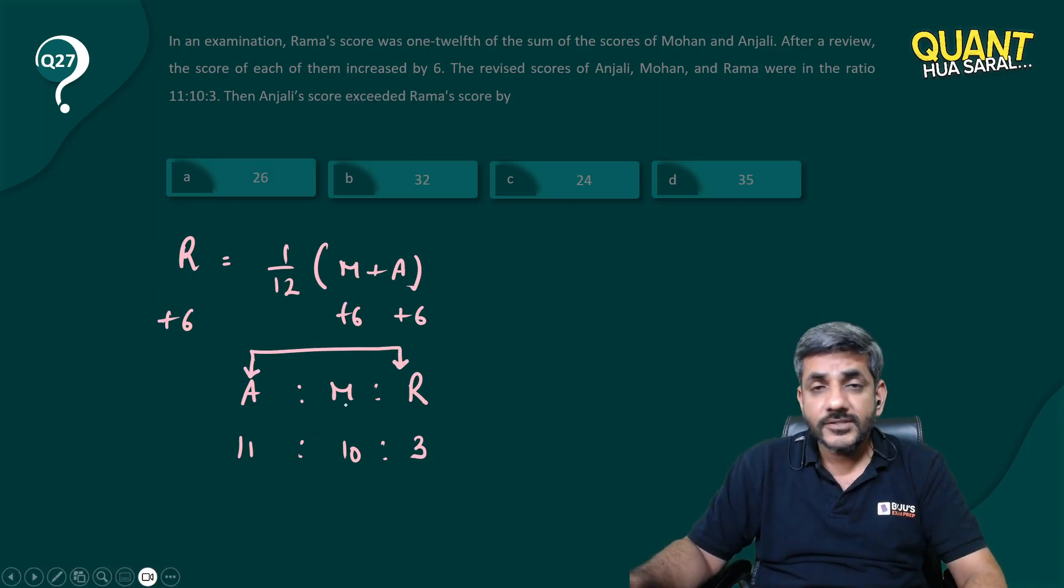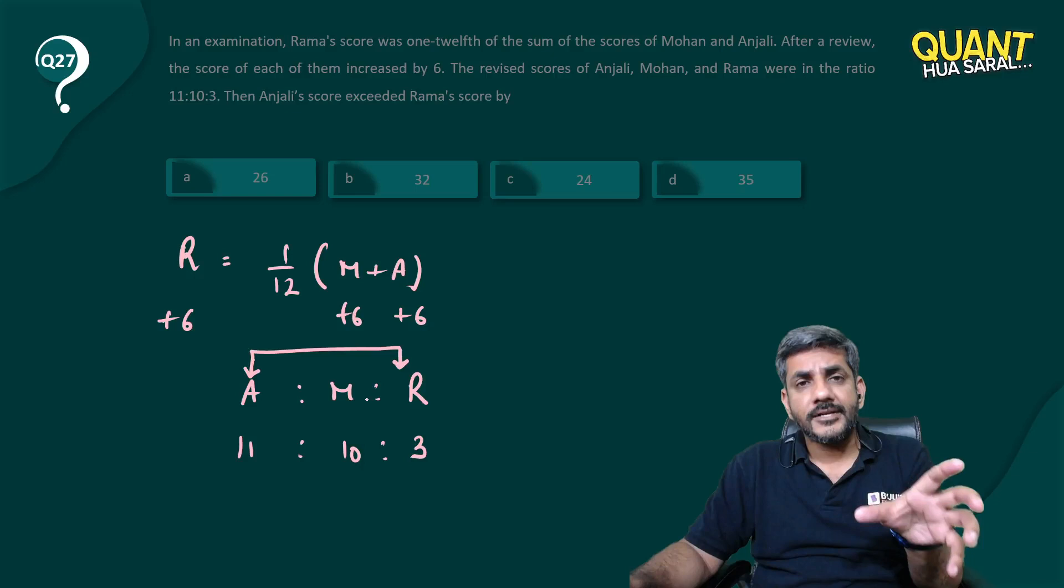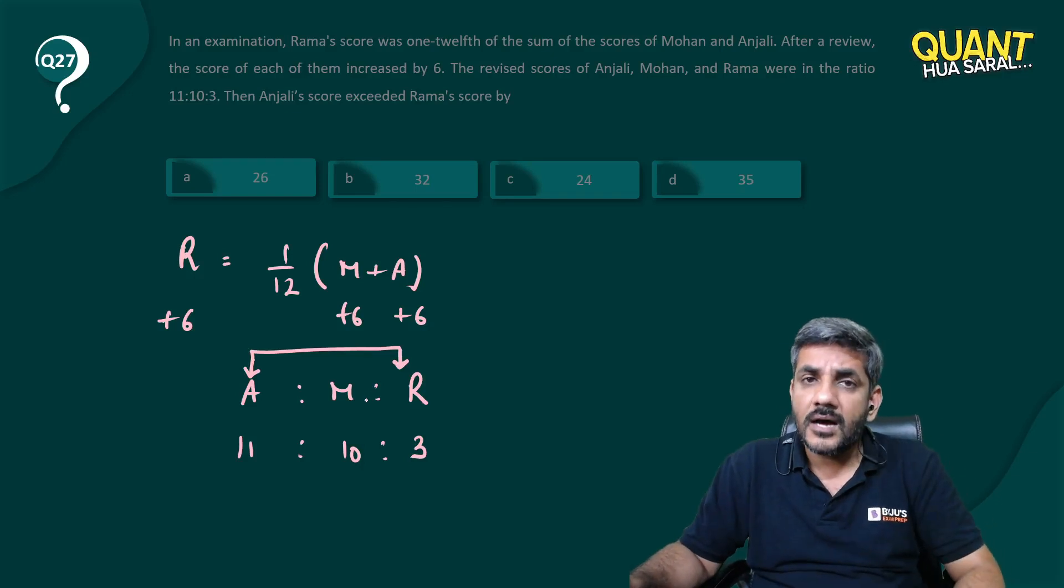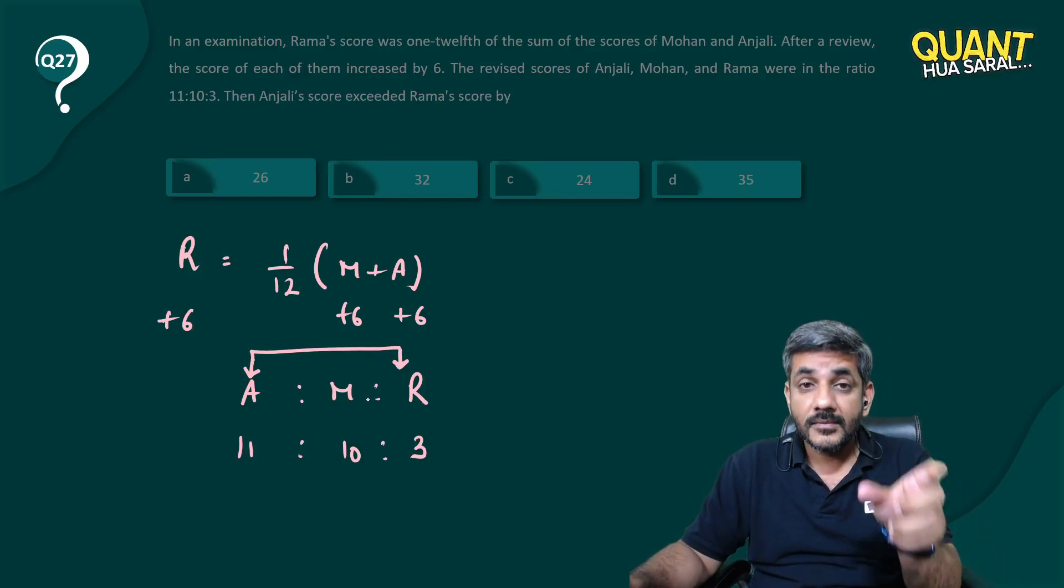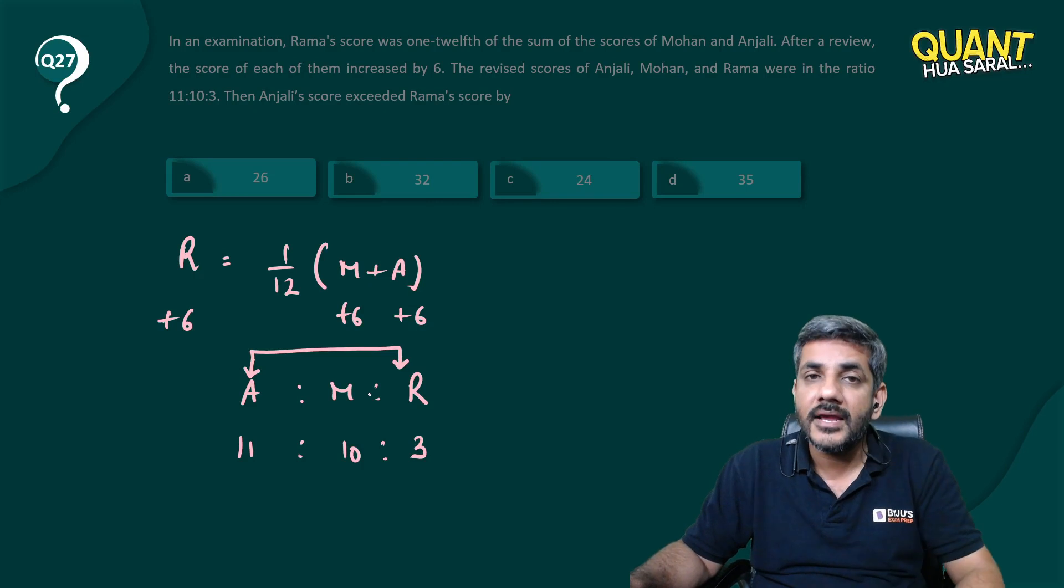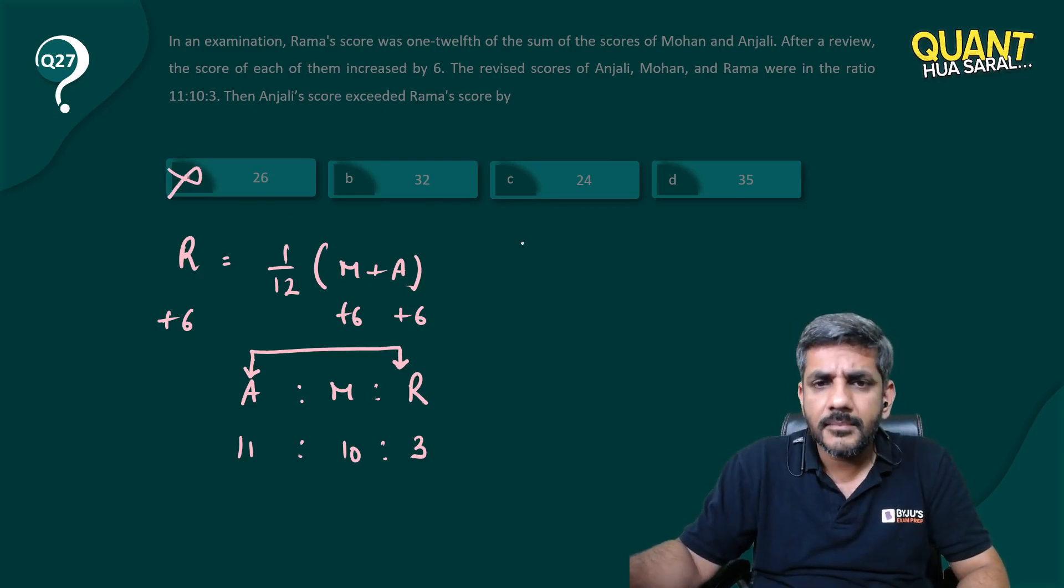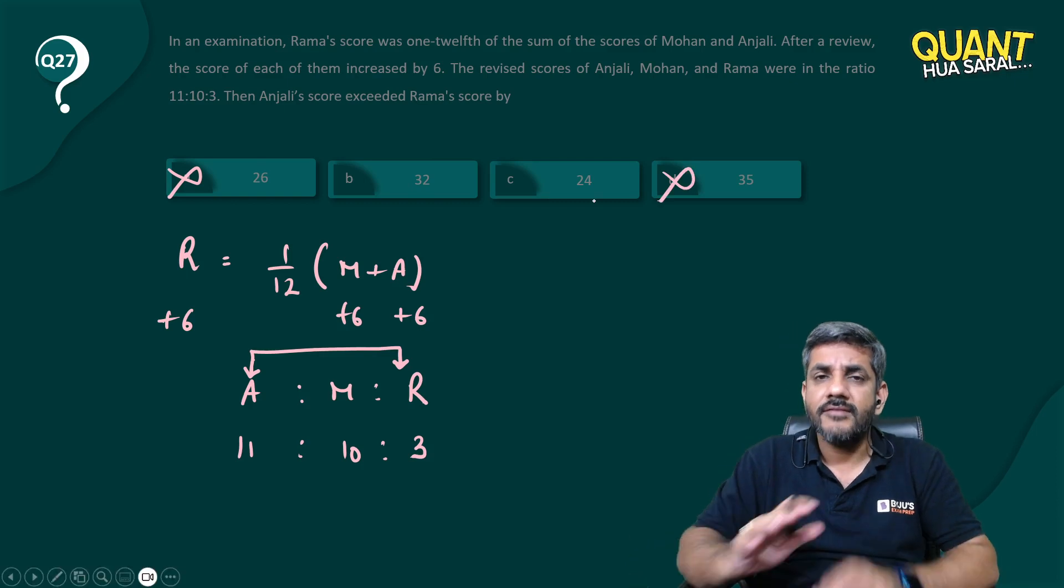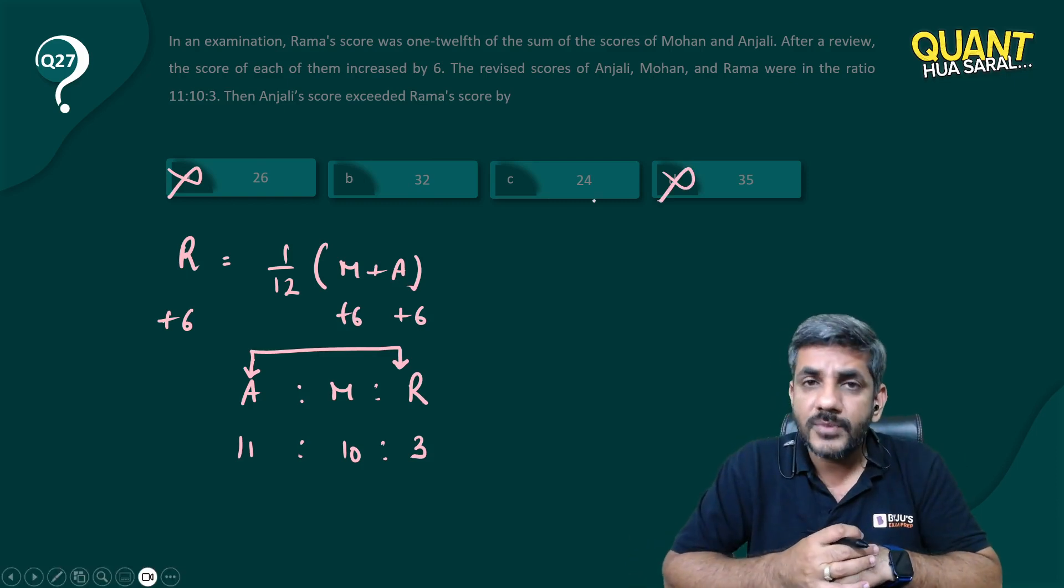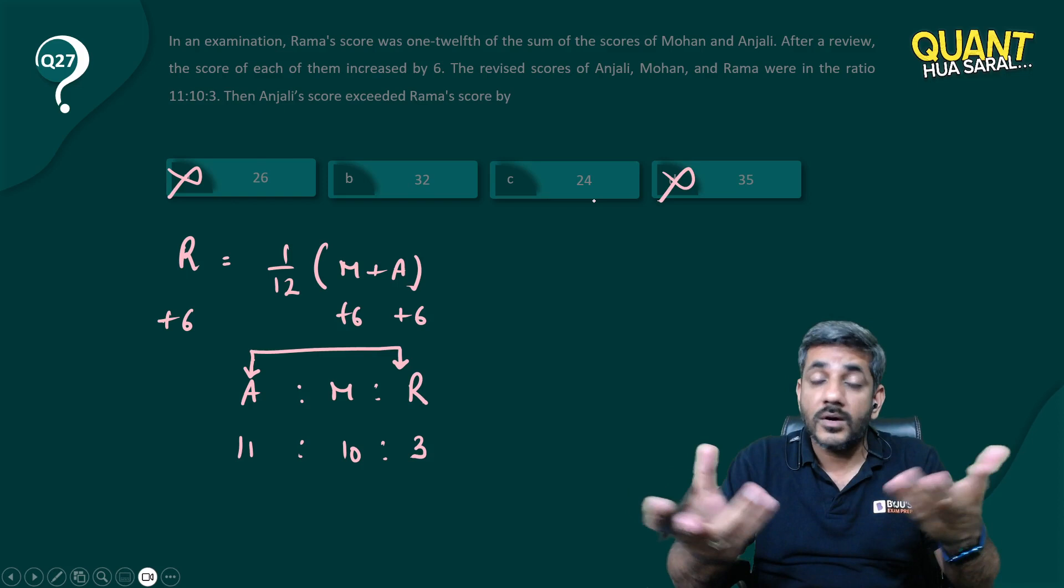Now first of all, when I look at the ratio, the difference between Anjali's and Rama's score is 8. Eleven and 3, they differ by 8. So that means my answer must be a multiple of 8. Forget about 26, forget about 35. Either it is 32 or it is 24. Let us take one of these two.